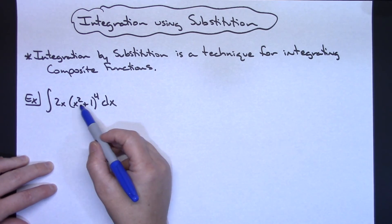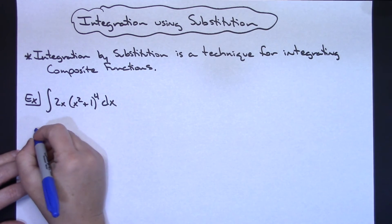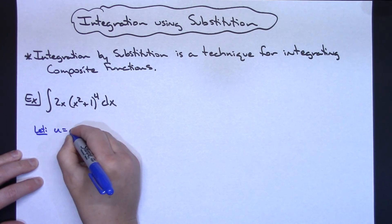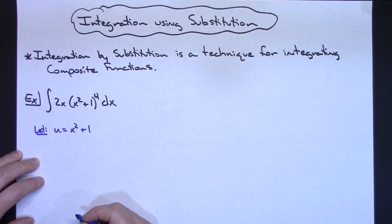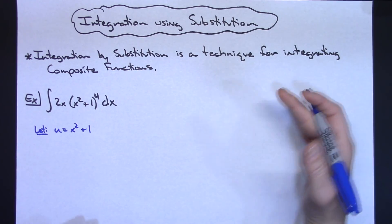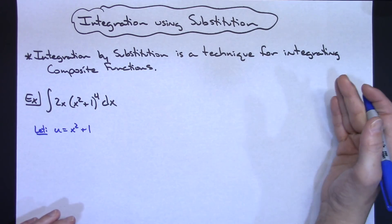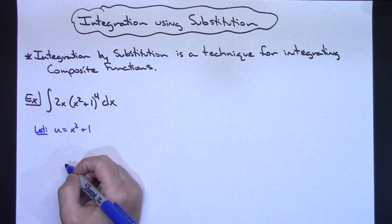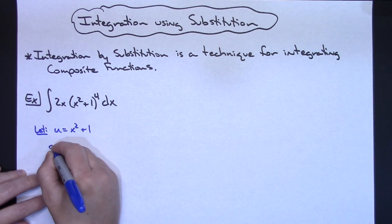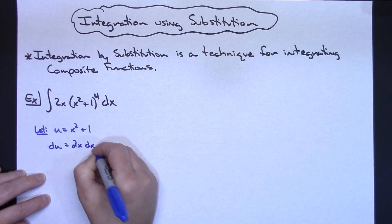If I let my u be the inside part, that's a really good starting point. So right under here I'm going to let u equal that inside part, so x squared plus 1. Now once I make that decision — it could be the right decision, it might be the wrong decision — you'll know whether or not you have made the right decision in a few more steps. Once you've decided this, then you're going to take the derivative of both sides. The derivative of u is going to be du, and then the derivative of this side is going to be 2x, and we're going to put in that dx.